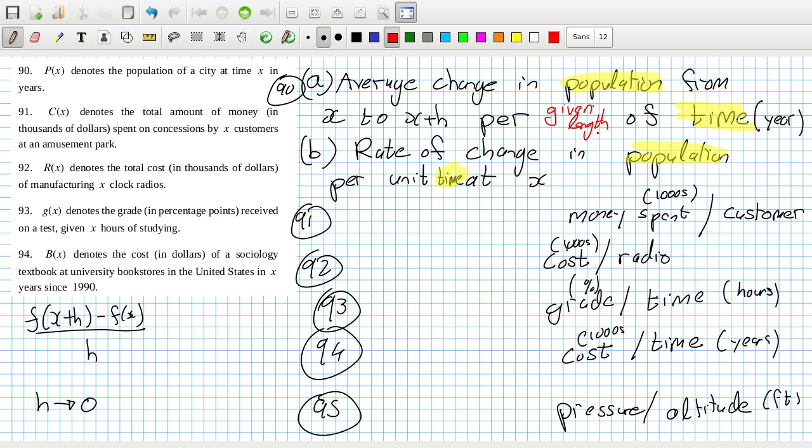I think what I would change, rather than per unit time, I think I'd rather swap that word out. It's fine for part b, but for part a, I would rather say per given length rather than unit, I think that would be a little bit better. So yeah, I feel better with that one. Average change in population from x to x plus h, I don't really like saying x plus h either, because I've just said for given length.